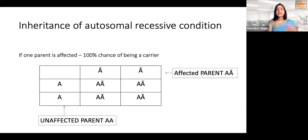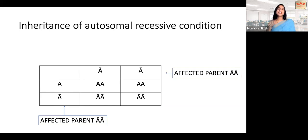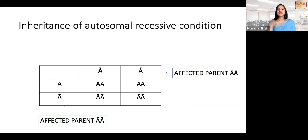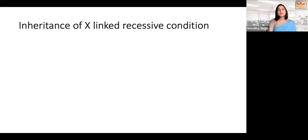If both parents are affected with an autosomal recessive condition, there's a 100% chance that all children will be affected — all alleles in the box are mutated. So if a thal major marries a thal major and they have children, all the children are going to be thal majors. This is unlikely in practice, but with modern treatment it is possible, and all offspring will be affected.